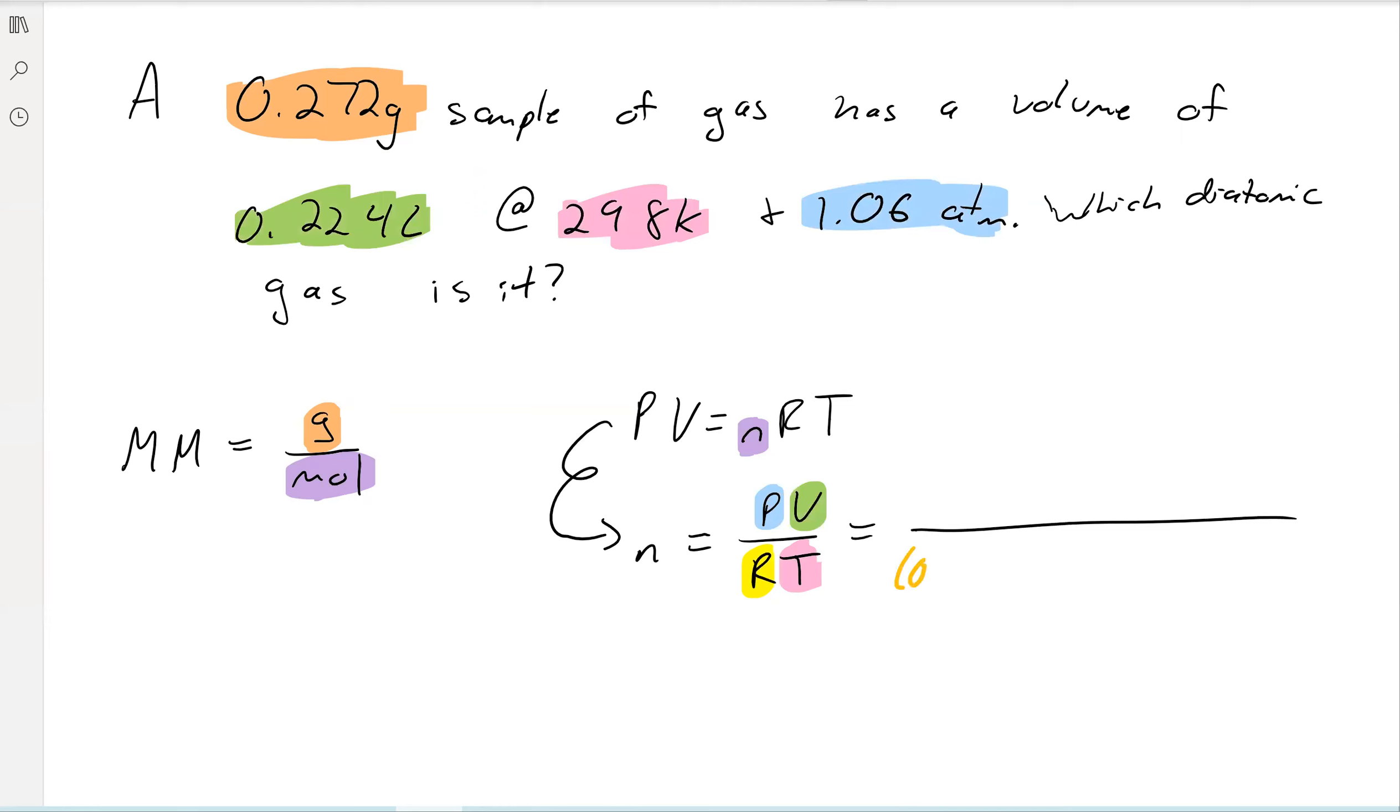So remember, your gas constant is 0.0821 liters atmospheres over moles Kelvin, right? So those are the units that we have to use for everything. And we do indeed have liters, atmospheres, and Kelvin.